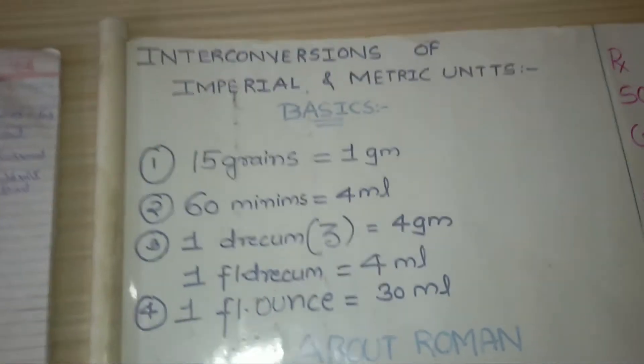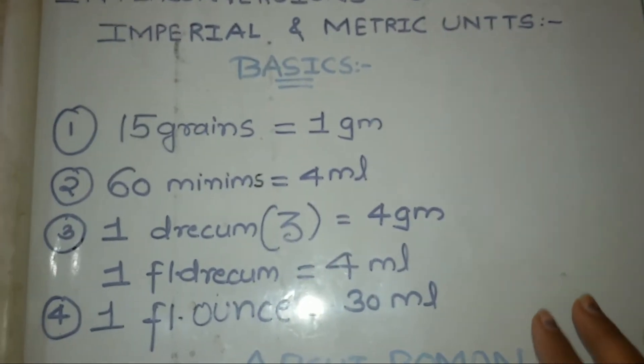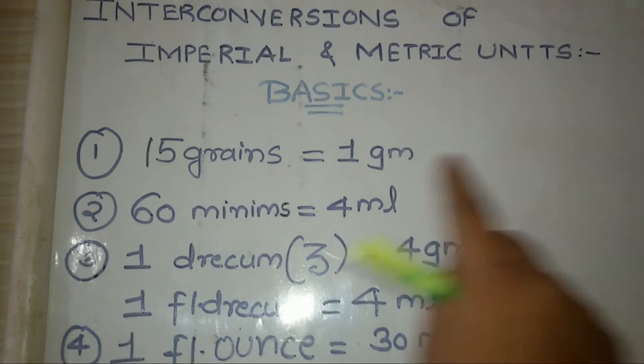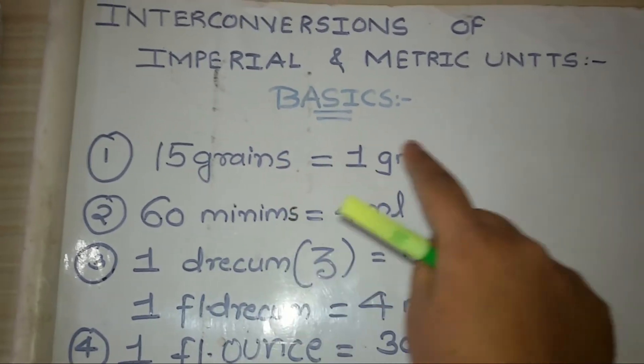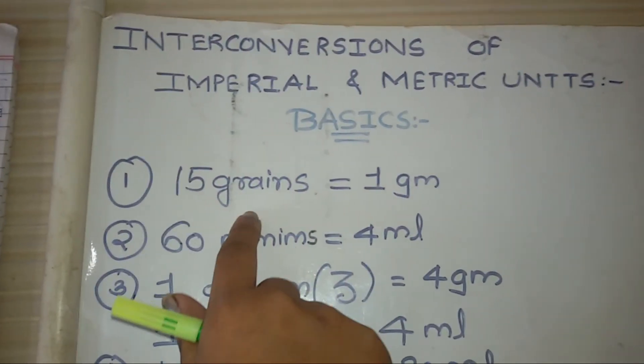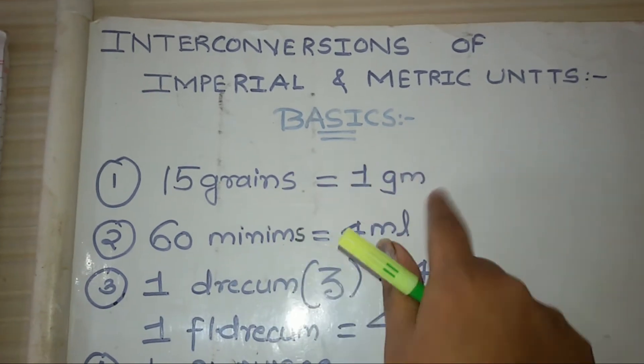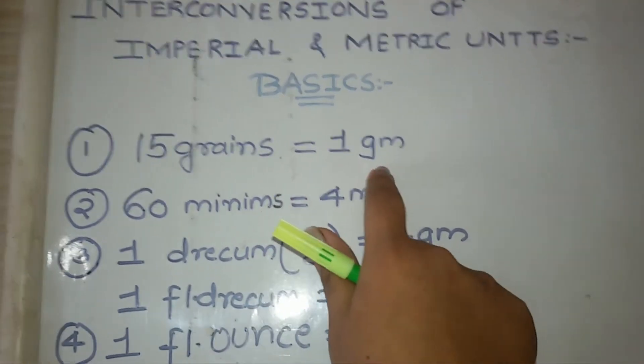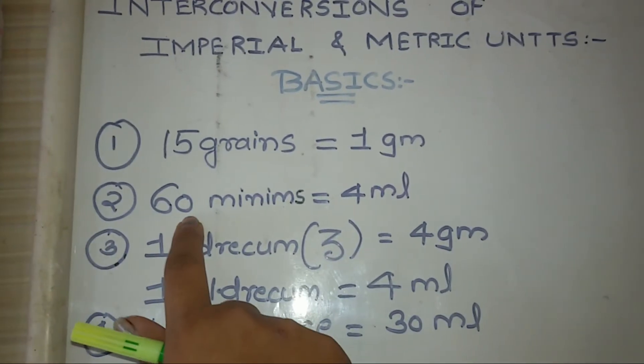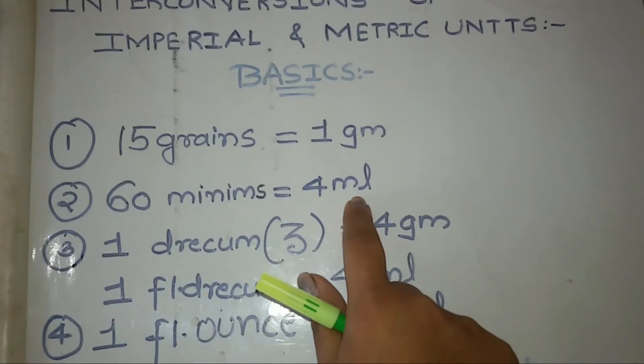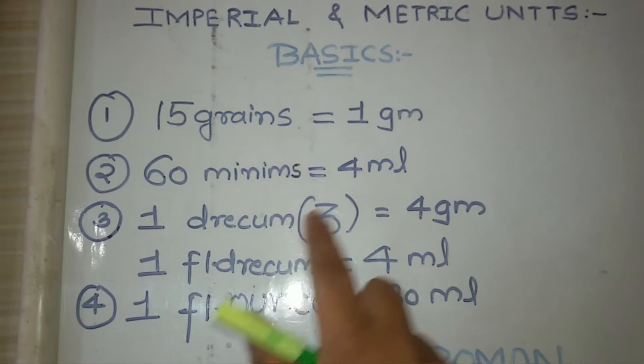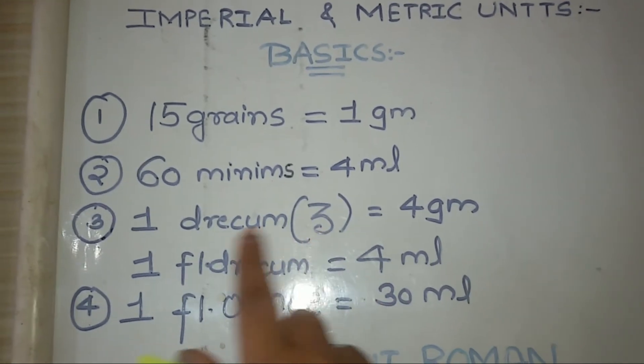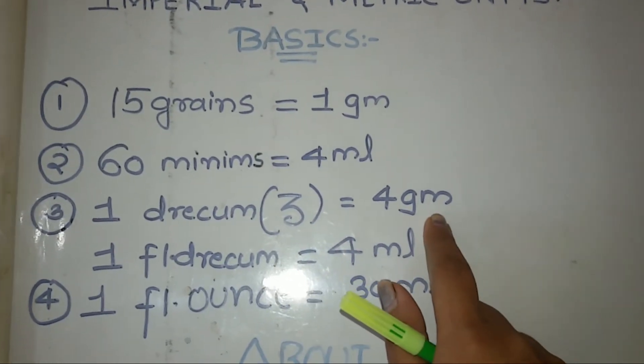There are four basic formulas you have to remember. First, 15 grains is equal to 1 gram. This is imperial units and this is metric units. Whereas, 60 minims is equal to 4 ml. One drachm, drachm symbol is like this, one drachm is equal to 4 grams.